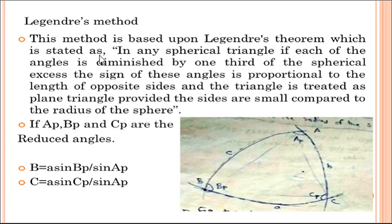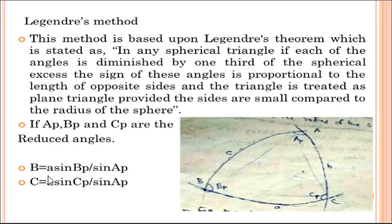The last method is Legendre's method, based upon Legendre's theorem, which states: in any spherical triangle, if each of the angles is diminished by one-third of the spherical excess, the sines of these angles are proportional to the lengths of the opposite sides, and the triangle is treated as a plane triangle, provided the sides are small compared to the radius of the sphere. Let Aₚ, Bₚ, and Cₚ be the reduced angles. Then, knowing one side A, we calculate: B = A sin(Bₚ) / sin(Aₚ), and C = A sin(Cₚ) / sin(Aₚ). By using this theorem, we can find all other sides knowing just one side.